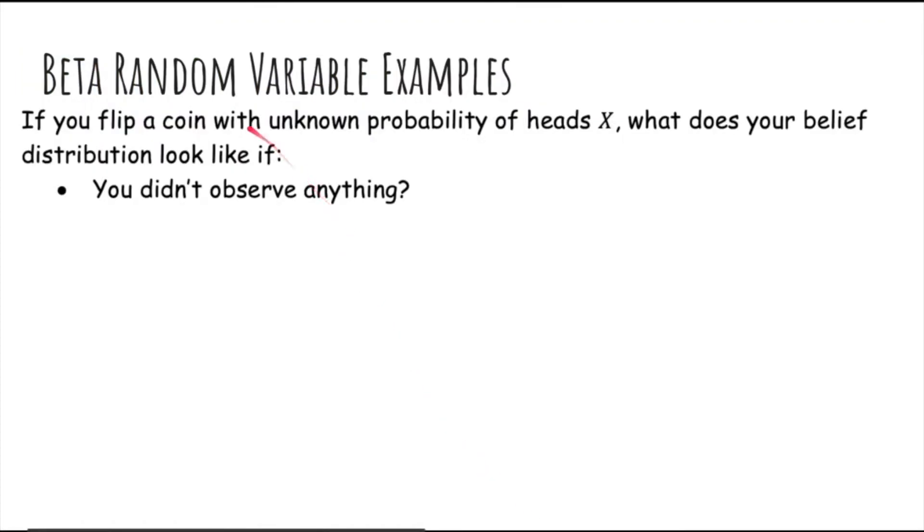So again, let's do some examples. If you flip a coin with unknown probability of heads x, then your distribution, if you didn't observe anything, would just be beta of 0 plus 1, 0 plus 1, because you have observed 0 successes and failures before, so we have to add 1, so beta 1, 1. And this is the same as a uniform, by the way, so it has no mode.